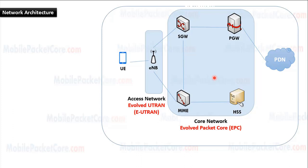After we learned the difference between the control plane and the user plane, let's discuss the network architecture of LTE. The LTE network contains the access network and the core network. The access network is called the Evolved UTRAN, E-UTRAN, and it contains the E-Node Bs. While the core network is called the Evolved Packet Core, EPC, and it contains the MME, the SGW, the PGW, and the HSS.